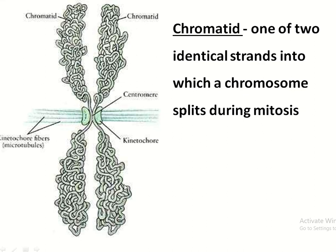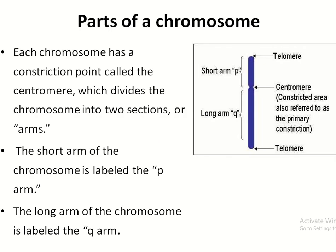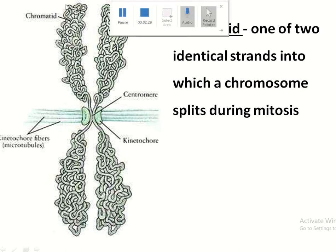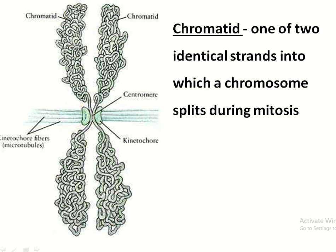Just before the mitotic cell division, the chromosome duplicates its structure, so there are two p-arms and two q-arms. One p-arm and one q-arm — this portion of the chromosome is known as the chromatid. A chromatid is formed from a chromosome just before mitotic cell division.